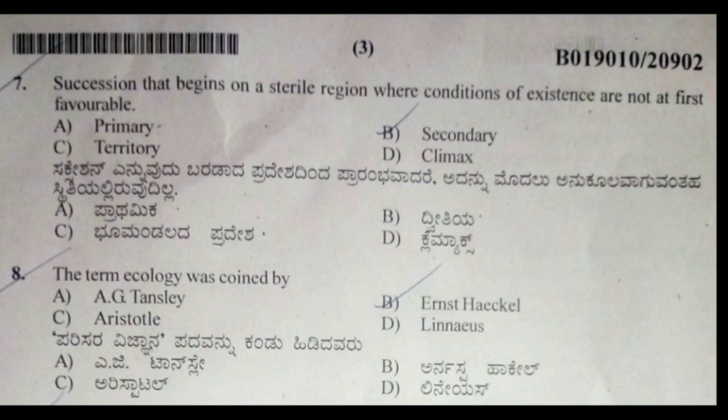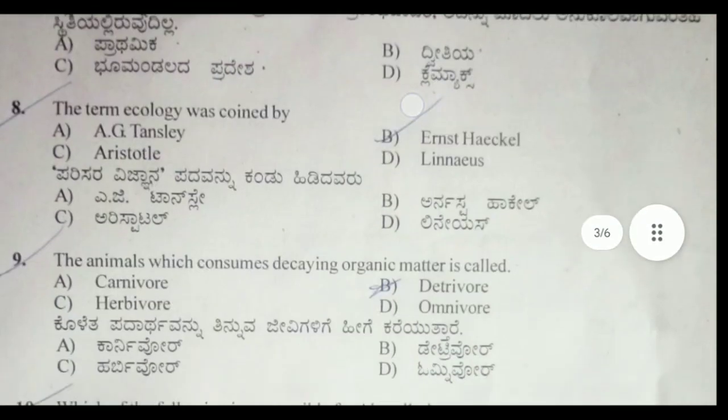Seventh question: succession that begins on a sterile region where conditions of existence are not at first favorable — the correct answer is option B, secondary succession.